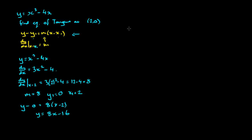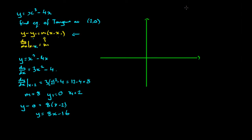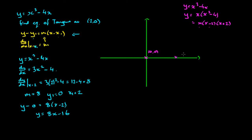Let's do this graphically because it's much easier to understand with a picture. Here are our axes, and we'll factorize the function. y equals x cubed take 4x equals x(x squared take 4) equals x(x minus 2)(x plus 2). These give us the roots: x equals 0, x equals 2, and x equals negative 2. We mark those in: (0,0), (2,0), and (−2, 0).